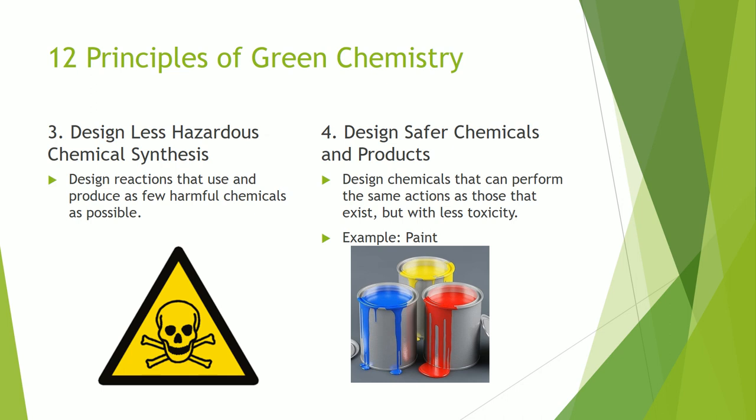Number three: design less hazardous chemical synthesis. Design reactions that use and produce as few harmful chemicals as possible. Number four: design safer chemicals and products. Design chemicals that can perform the same actions as those that exist, but with less toxicity. For example, Procter and Gamble developed a mixture used in paint that uses soya oil and sugar rather than fossil fuels, reducing the hazardous components of the paint by 50%.